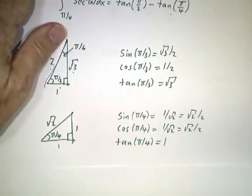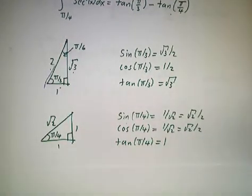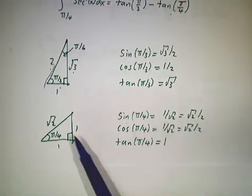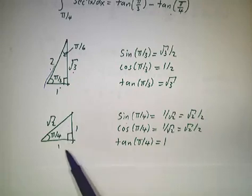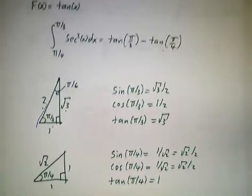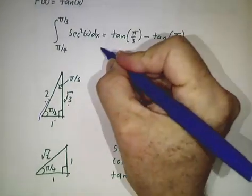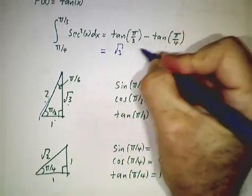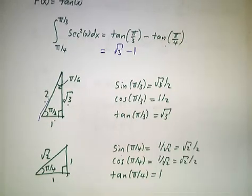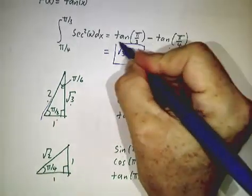π/4 is 45 degrees, so the sine is 1/√2, the cosine is 1/√2, the tangent is 1. So up here we have √3 minus 1, and that's our answer.